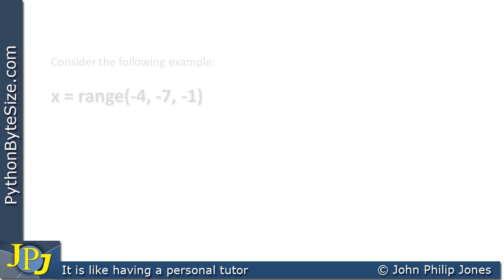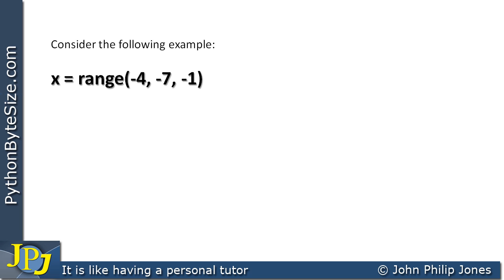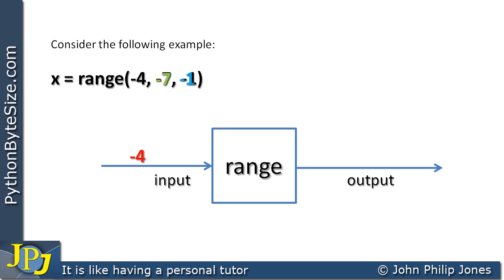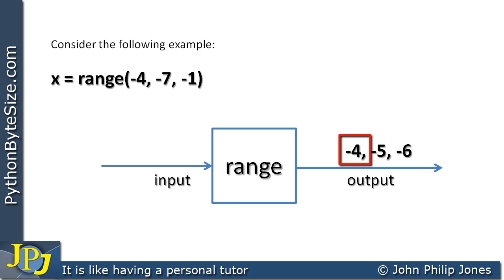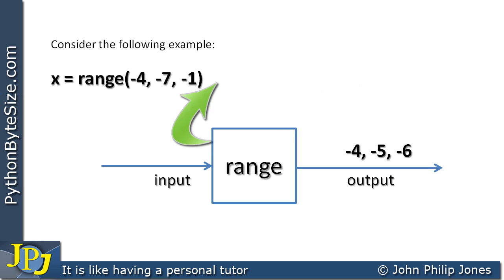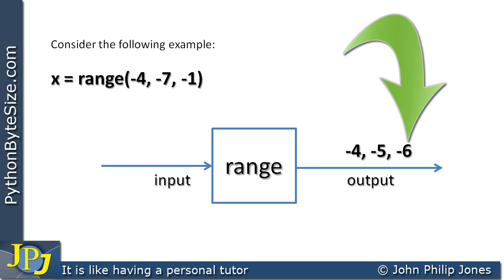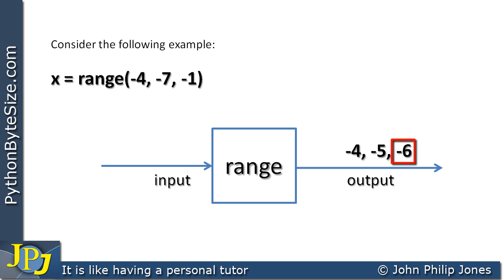Another example: x is assigned range(-4, -7, -1). We send in -4 as the start, -7 as the stop, and -1 as the step. The output is -4, -5, -6. It's -4 because that's the start, then goes to -5 because we step by -1 (minus 4 minus 1 equals minus 5), then to -6 (minus 5 minus 1). We stop at -6 because the stop value is -7 — and remember, you don't go to the stop value. This is now bound to variable x.